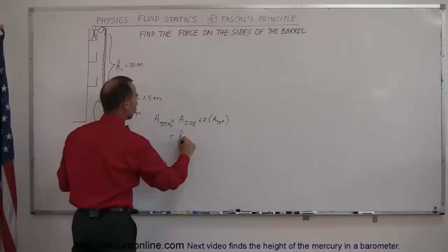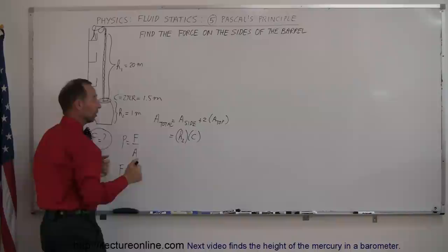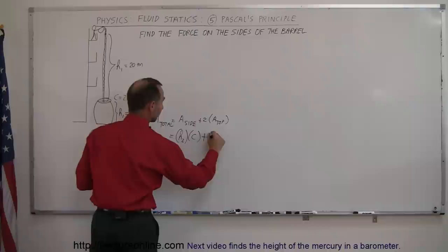That's the area of the side of the barrel. Then the top of the barrel is simply a circle, and there's two of them, one at the top and one at the bottom, so two times the area of the circle which is π times the radius squared.